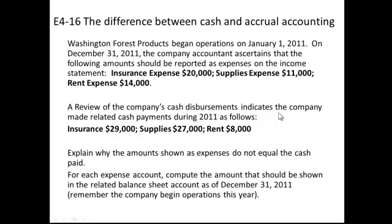But when they looked at the checkbook or the cash disbursements, the insurance cash payment was $29,000, supplies was $27,000, and rent was $8,000. And so the question was, why is there a difference?